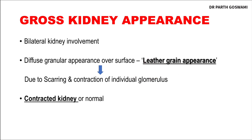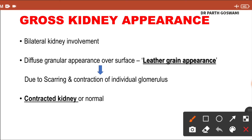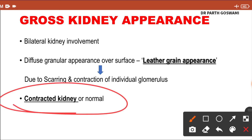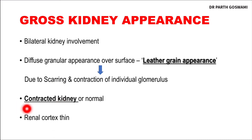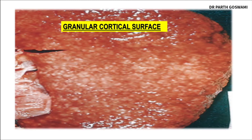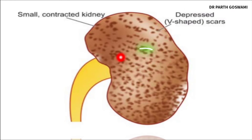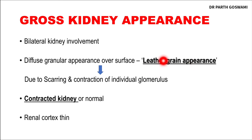The scarring and contraction of individual glomeruli ultimately gives a granular appearance over the kidney surface — the leather-grain appearance. Because of repeated endothelial injury and chronic scarring, the kidney can become contracted in the advanced stage, and the renal cortex is obviously thin. This is shown in the image and schematic diagram as a small contracted kidney with granular scars over the renal cortex.